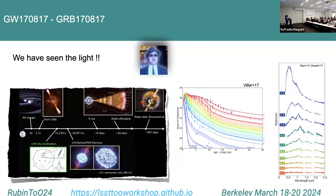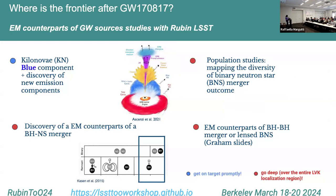Despite the fact that we expected to have other electromagnetic counterparts, we didn't find any. Even though we have dozens of neutron star mergers and neutron star–black hole mergers in the last two observing runs, we failed to find an electromagnetic counterpart due to several factors: we need to tile very quickly, go deep, and get on target promptly.